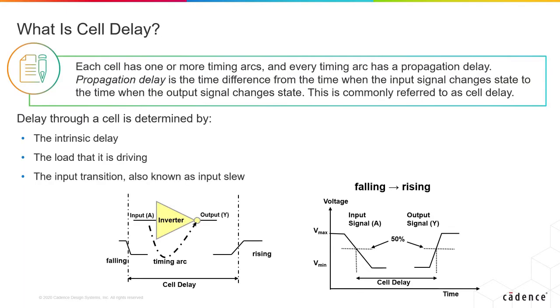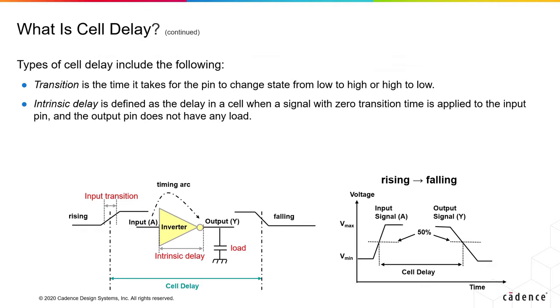A gate or cell has one or more timing arcs, and each of these timing arcs has a propagation delay associated with them. This propagation delay through the cell is commonly known as cell delay. We calculate cell delay based on the intrinsic delay of the cell, the load it's driving, and the input transition. You can break down cell delay into transition times and intrinsic delay.